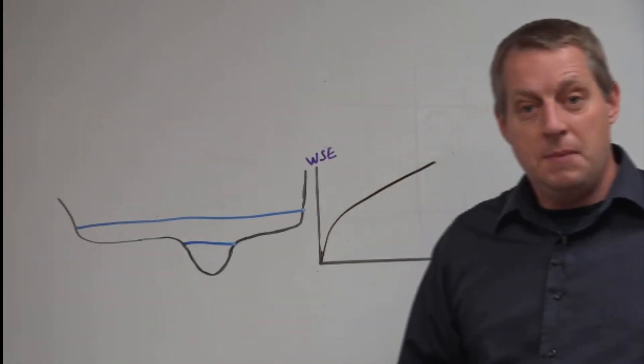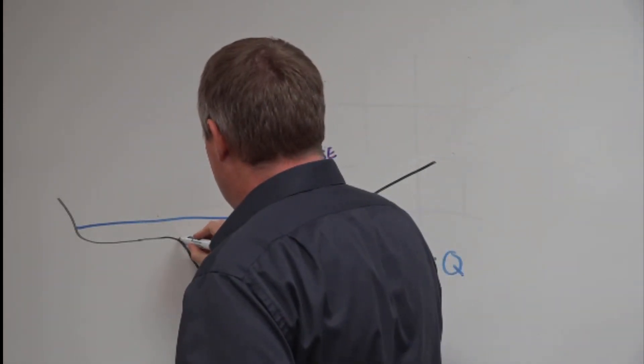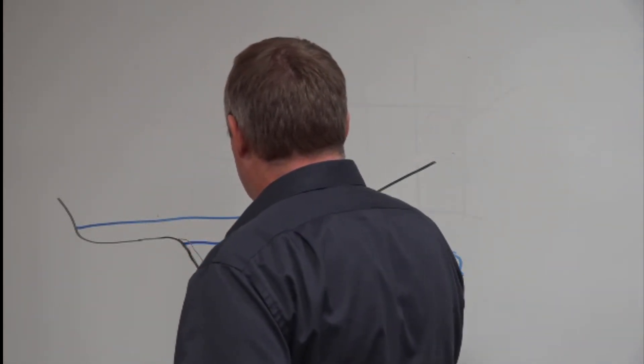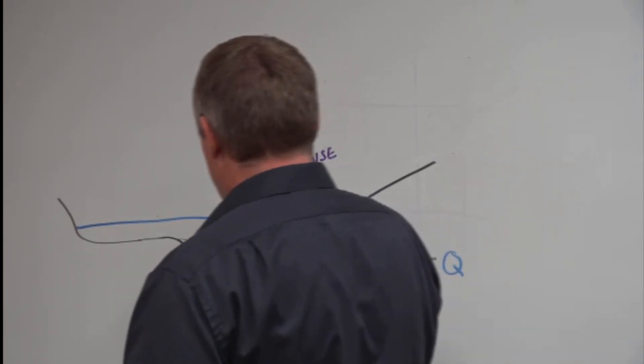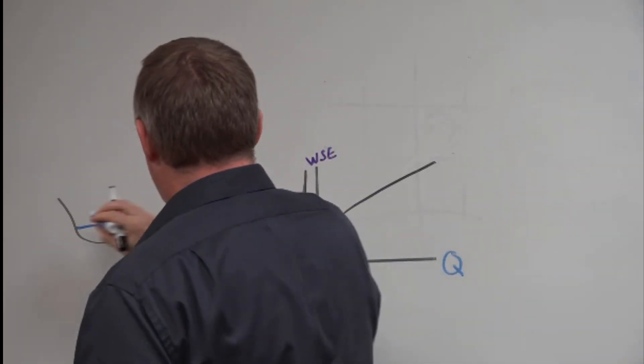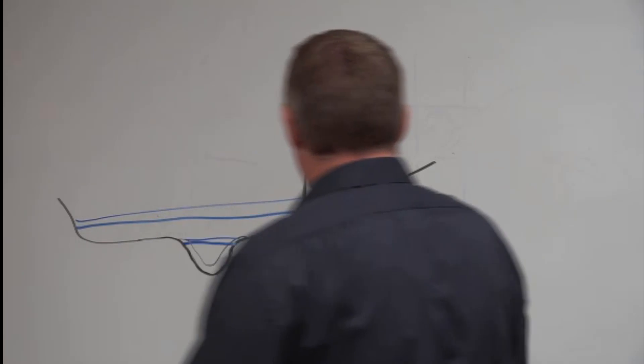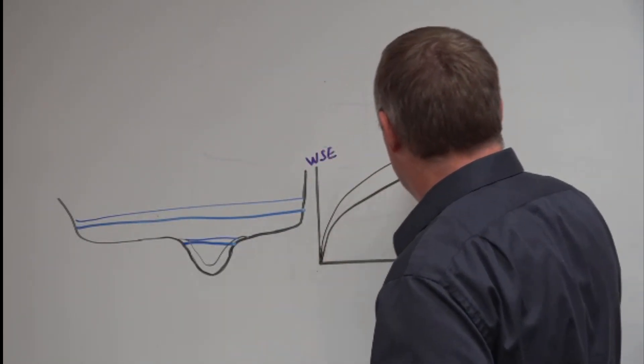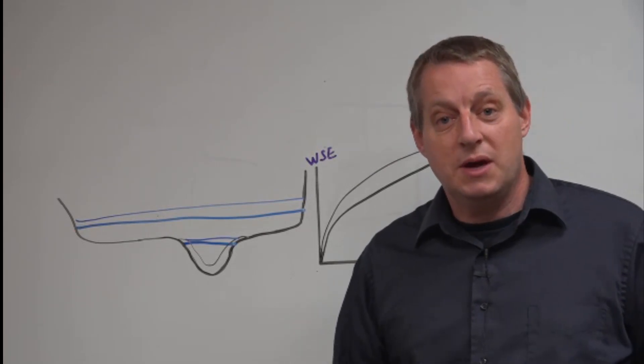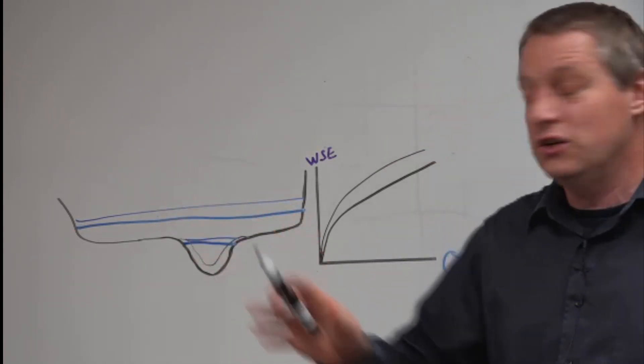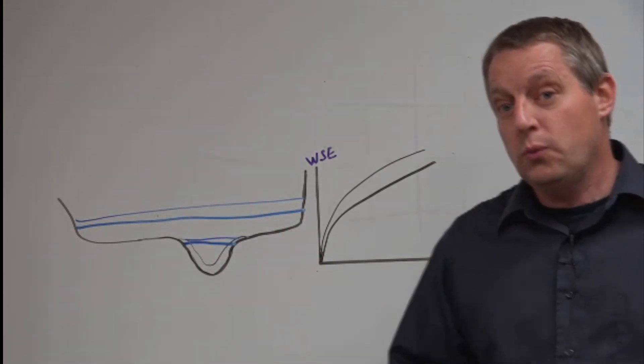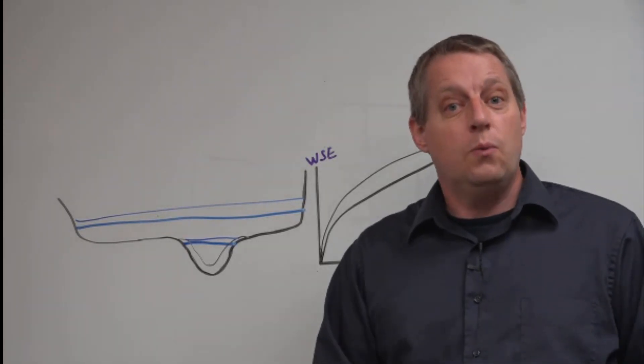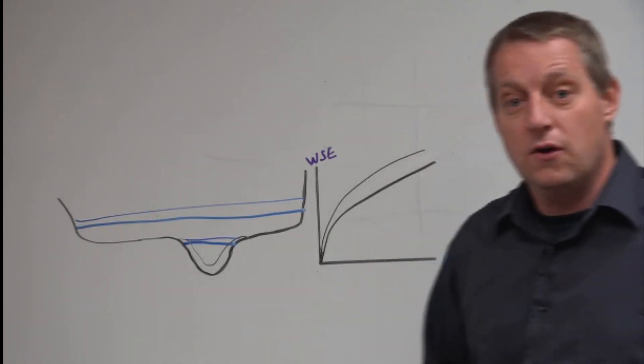And so you could imagine if you get deposition in your channel, these stages will be higher and your stage discharge curve will increase. Now that process tends to be monotonic, which just means kind of one directional, which means that your future with and without project conditions will have a higher stage for a given flow than your current.